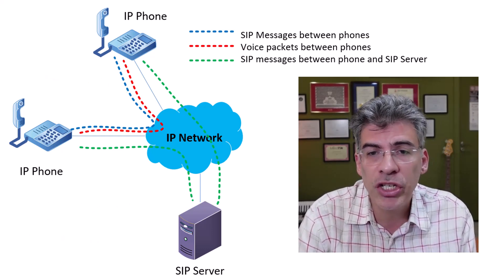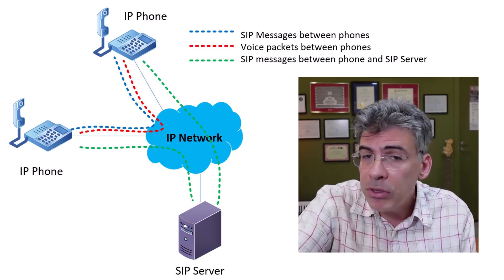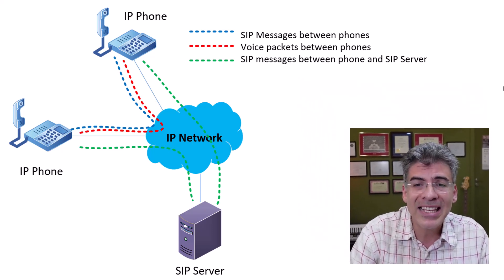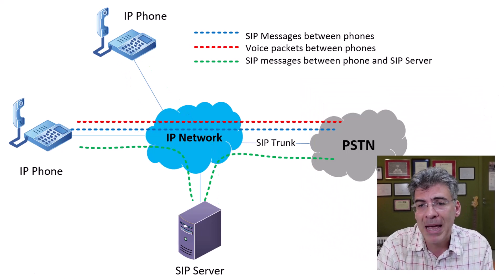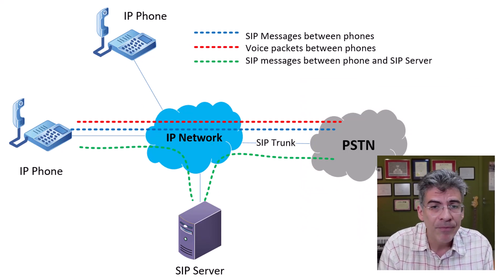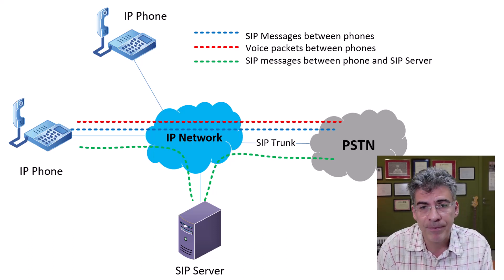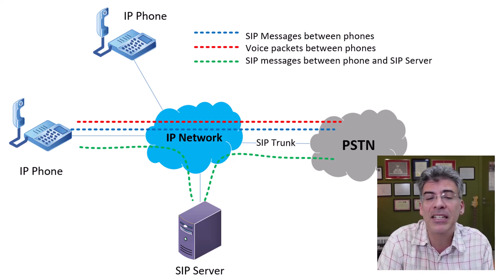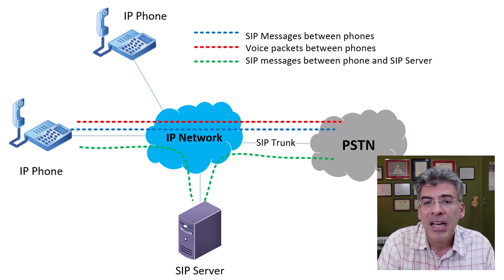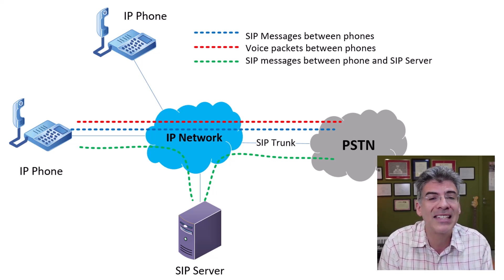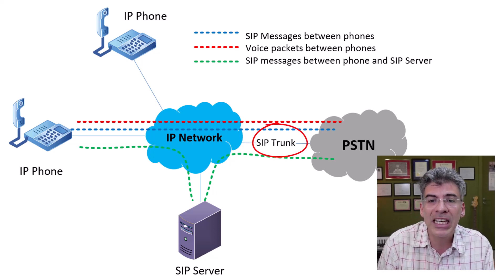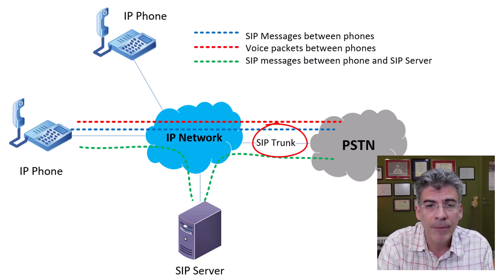In the case where a call is initiated from inside an organization to an outside destination, the same set of SIP and voice packet communications take place, but this time they occur with the SIP entity on the public-switched telephone network, or PSTN. This may be a gateway within the telco's network or a SIP end device. In each case, an organization would procure what is known as a SIP trunk, which is essentially a connection from the local organization to the worldwide telephony network.